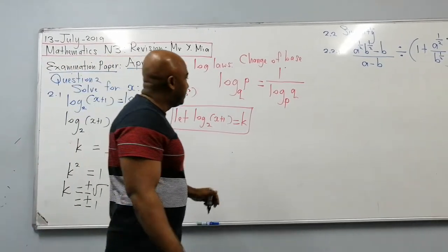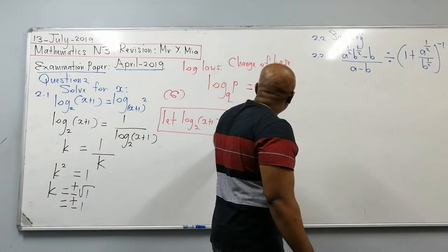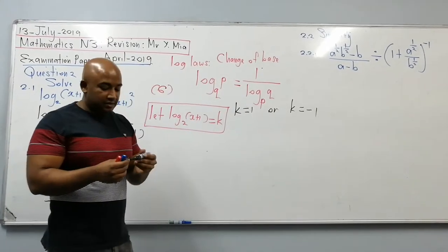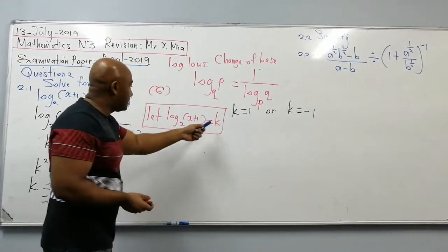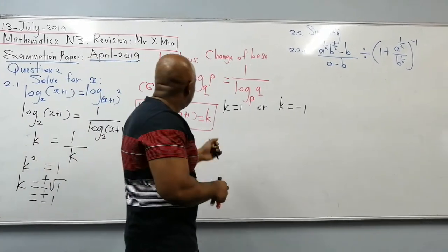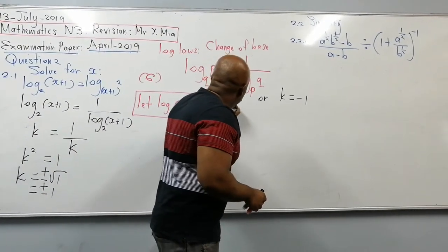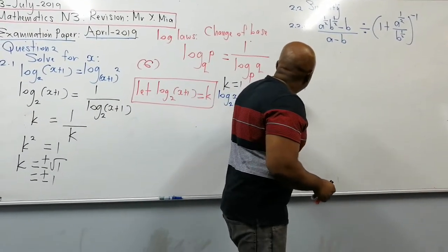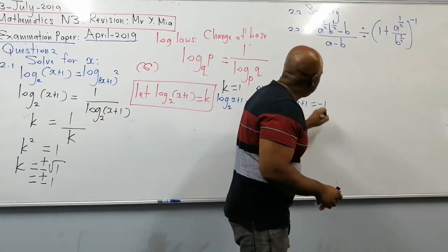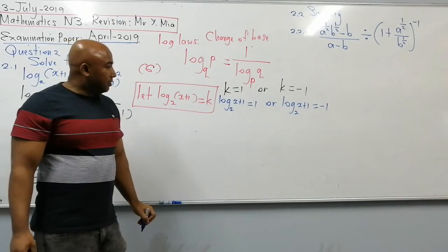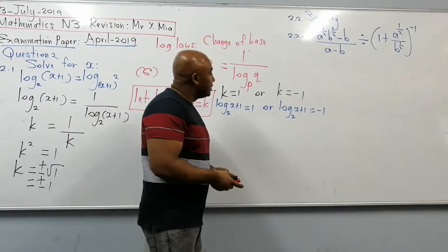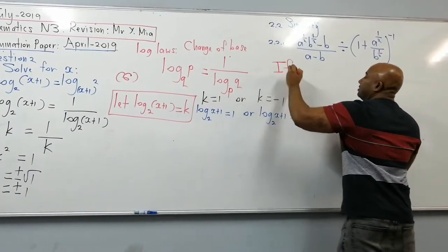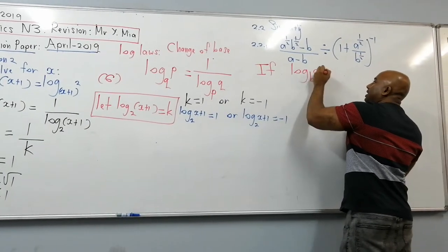So k equals 1 or k equals minus 1. But what was k? k was log of x plus 1 to the base 2. Now substituting back: log of x plus 1 to the base 2 equals 1, or log of x plus 1 to the base 2 equals minus 1. We can use the log rule: if log a to the base b equals c, then a equals b to the power c.